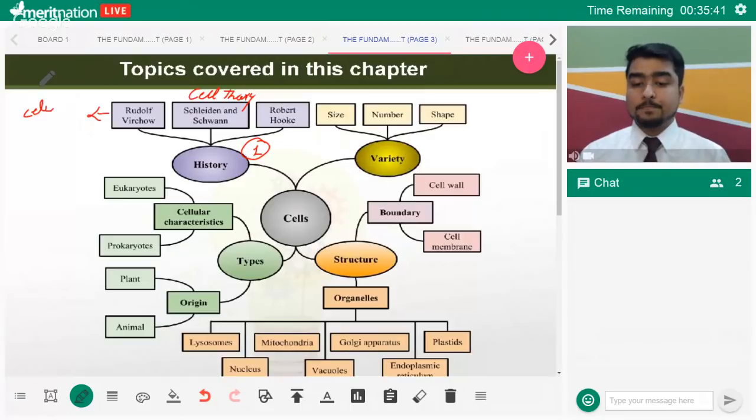You should be aware about size, number, and shape with one example each. For number you can take RBCs. For shape, you can talk about WBCs which change their shape to exit the arteries and veins in order to perform immune functions. For size, you can talk about neurons which are generally long because they have to conduct impulses over long distances.